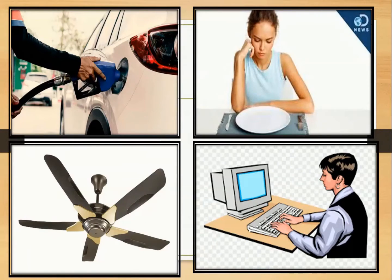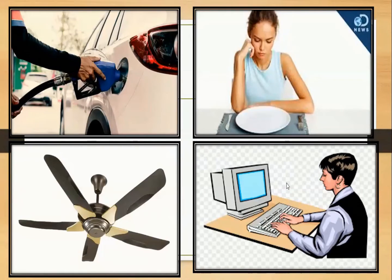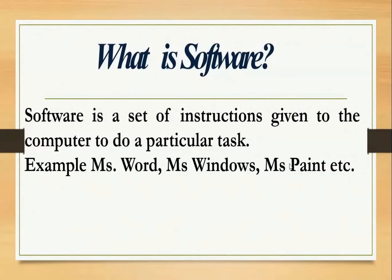Same way, if human beings like us want to work, we need energy to work, and for that we have to eat food so that we have energy and we can work. Likewise, if I want to run a fan, we need electricity. If electricity is not there, the fan will not work. Same way, if we want to run a computer, we need some instructions inside the computer. Without those instructions, the computer will not work. And those specific instructions which are needed to run a computer are called software.